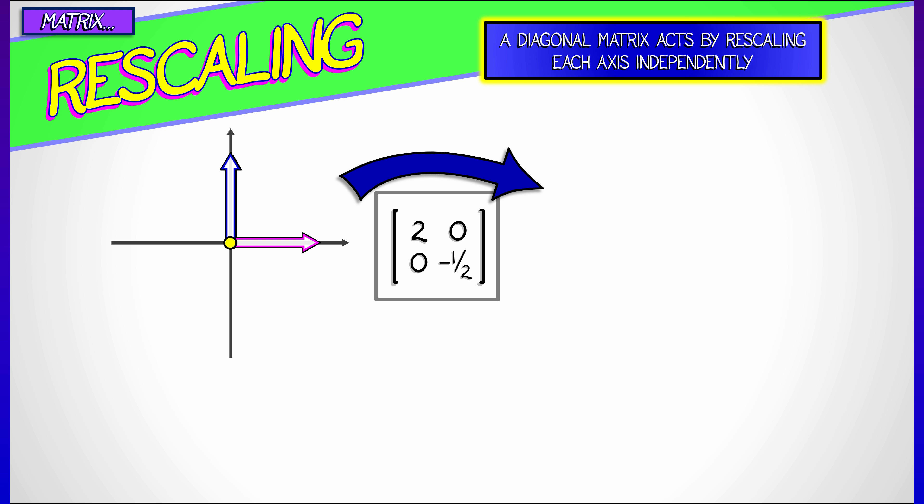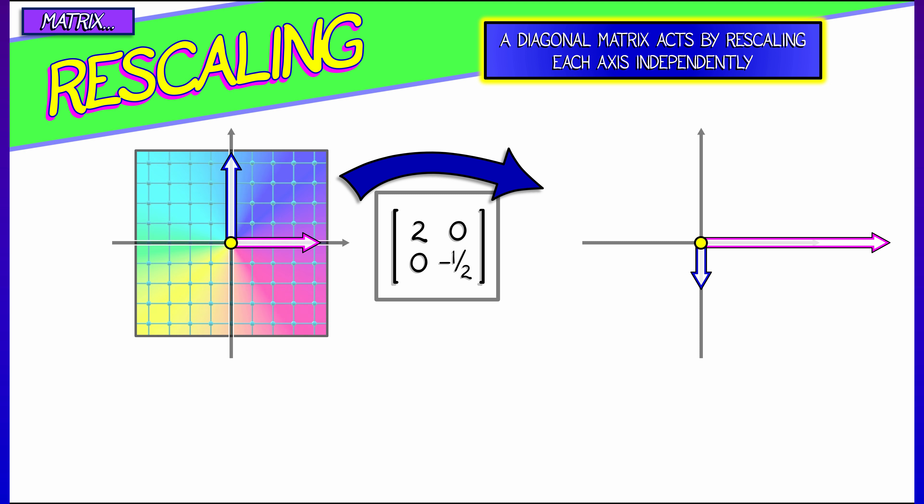This sends the i vector to 2, 0. That is twice the i vector. It sends the j vector to 0, negative one-half. That is negative one-half times the j vector.